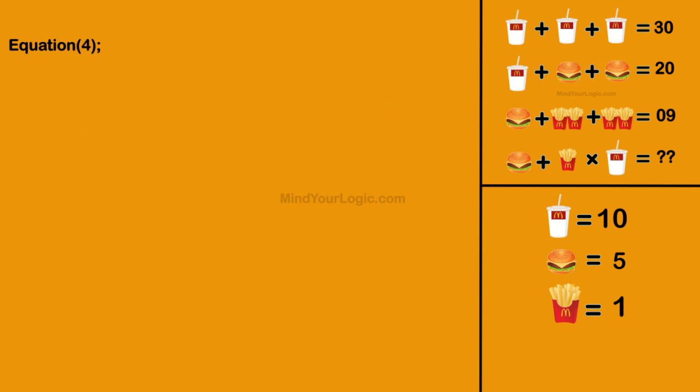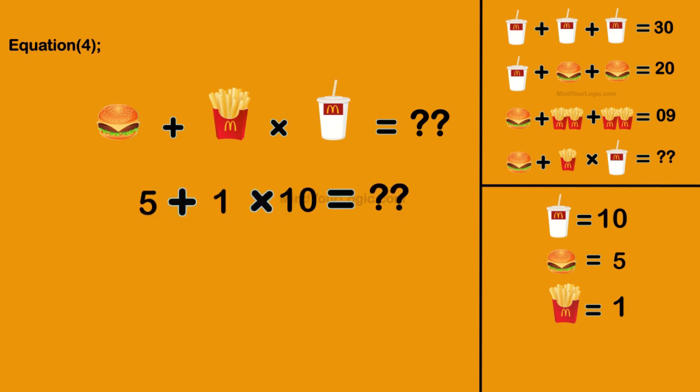Now, moving to final equation 4: Burger plus Fries multiply McDonald's Drink equals question mark. Substituting all the values and applying the BODMAS rule, we get the value of the final equation: 15.